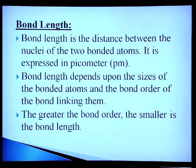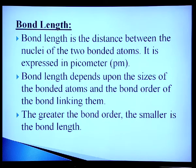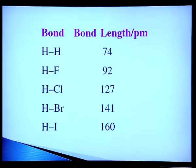Bond length is the distance between the nuclei of two bonded atoms, expressed in picometers (pm). Bond length depends on the size of the bonded atoms and the bond order of the bond linking them — the greater the bond order, the smaller the bond length. Bond lengths for H–H, H–F, H–Cl, H–Br, and H–I are 74, 92, 127, 141, and 160 pm respectively.